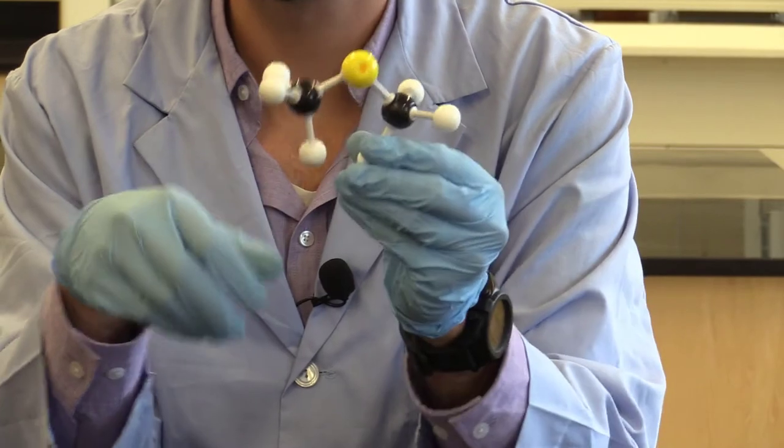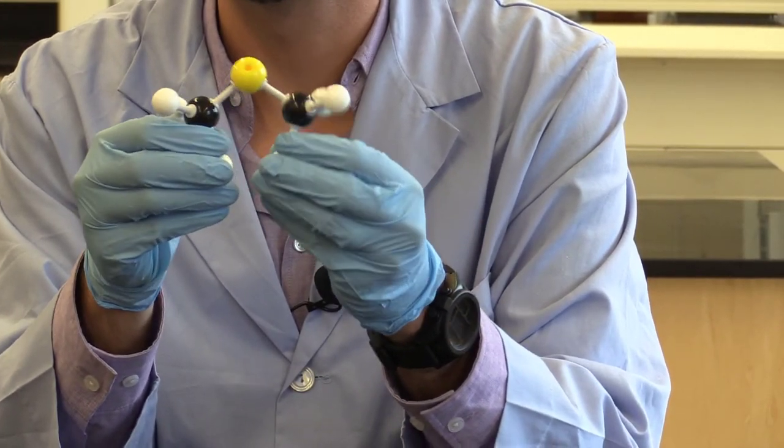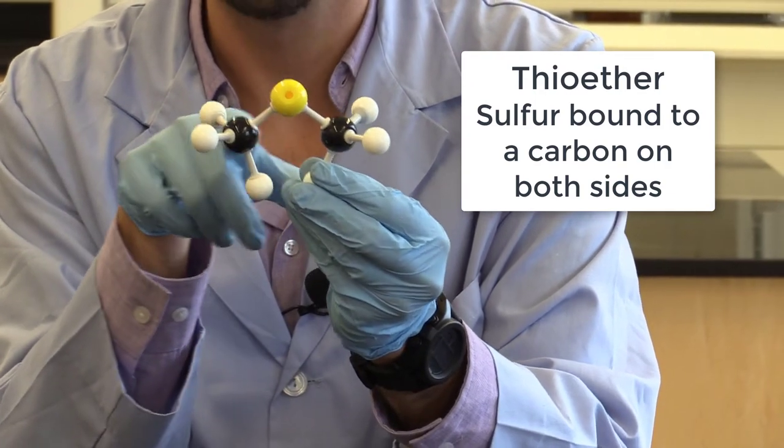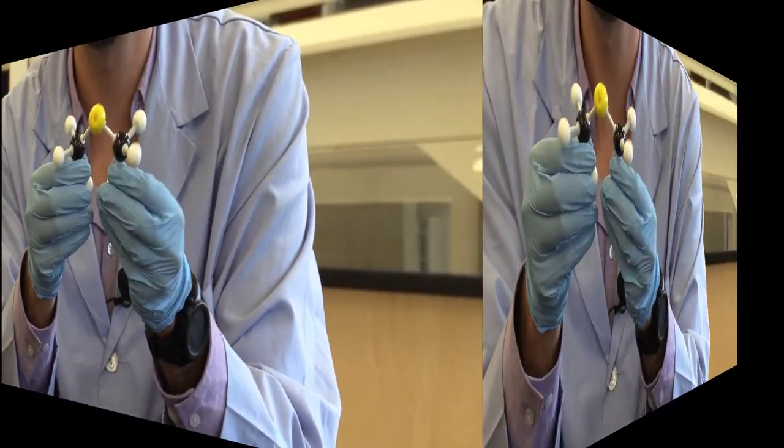And then our last structure is our thioether. So as you can guess by the name, it is a sulfur bonded to a carbon on either side of it. So this concludes part one of our three parts. Thank you for watching and enjoy.